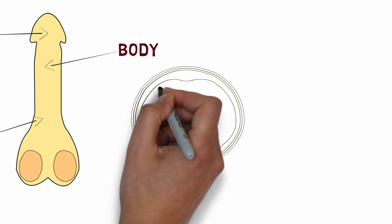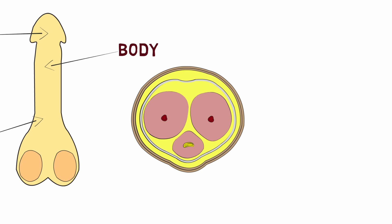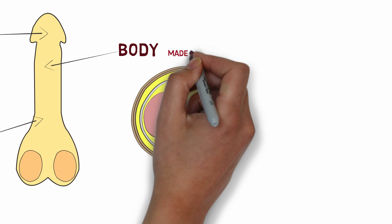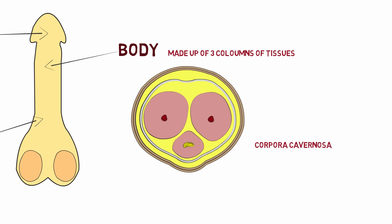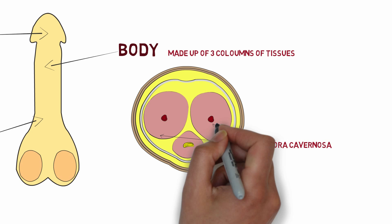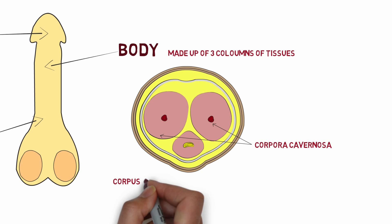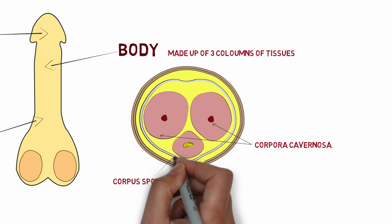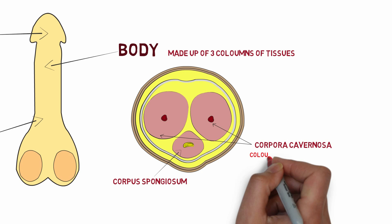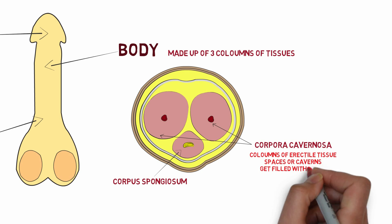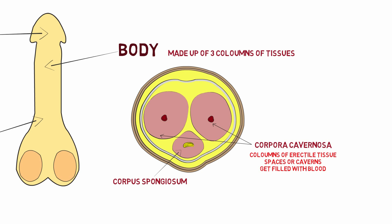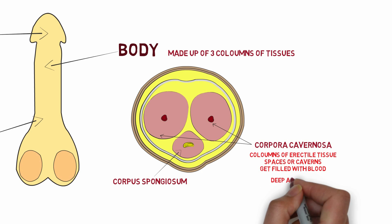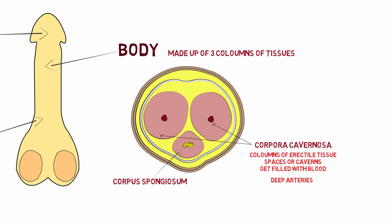To understand the structure of the body of the penis, let's look at a cross section of the body. It consists of three columns of tissues: two corpora cavernosa on the dorsal side and one corpus spongiosum on the ventral side. The corpora cavernosa are columns of erectile tissue that have spaces or caverns in between them that get filled with blood and erect the penis. The corpora cavernosa also contain deep arteries in them.